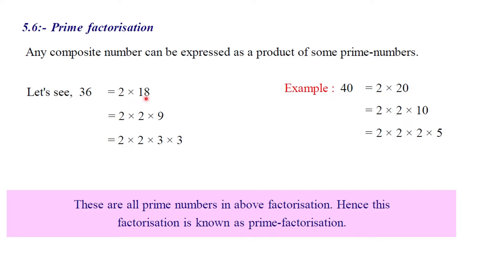Then we can find 2 into 2 into 9. Next, we can find 2 into 2 into 2. We can find that 9 is a composite number — I will write 9 as composite number: 3 into 3.